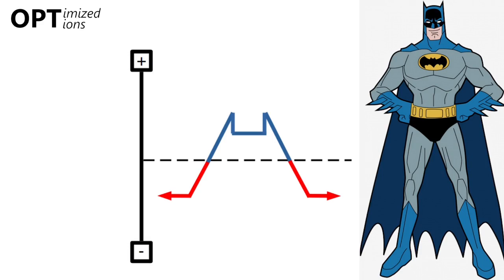Here we see in schematic form the strategy's payoff diagram, and it should be clear by now why it's called the Batman spread. The first thing to notice is that the Batman spread is a convex strategy where maximum loss is limited. Therefore the trader during the strategy setup knows beforehand what he or she can get at expiration, which is essential for good risk management. Like other spreads, the profit of a Batman spread is also limited — in this case the maximum profit corresponds to the tip of the bat's ears.